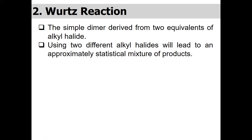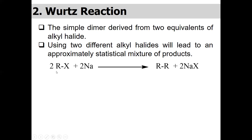In the general Wurtz reaction, if we have alkyl halide where R could be any carbon chain and X could be chlorine or bromine, we need two molecules of this alkyl halide — the same or different. In the case of the same, we have a dimer, and if the two alkyl halides are different we will have a mixture of alkanes. When we treat this alkyl halide with sodium metal we will have the alkane and two molecules of sodium halide.